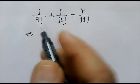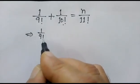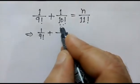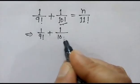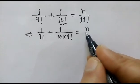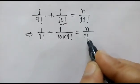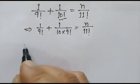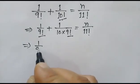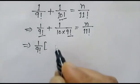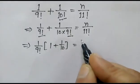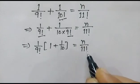So let's start. 1 over factorial 9 plus 1 over factorial 10 can be written with denominator 10 into factorial 9, equal to n over factorial 11. We take 1 over factorial 9 as common, giving us 1 plus 1 over 10, equal to n over factorial 11.